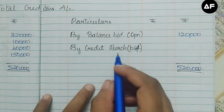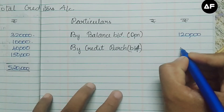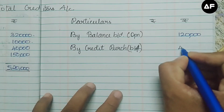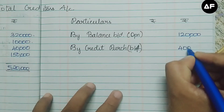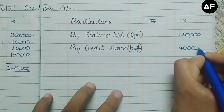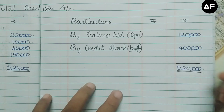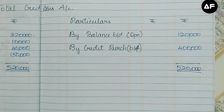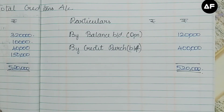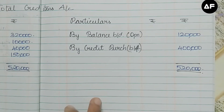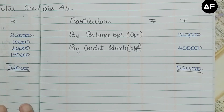Subtracting 1,20,000 from 5,20,000 gives the credit purchases of rupees 4,00,000. We have now finished opening all four accounts and achieved both the credit purchases and credit sales for this particular problem.